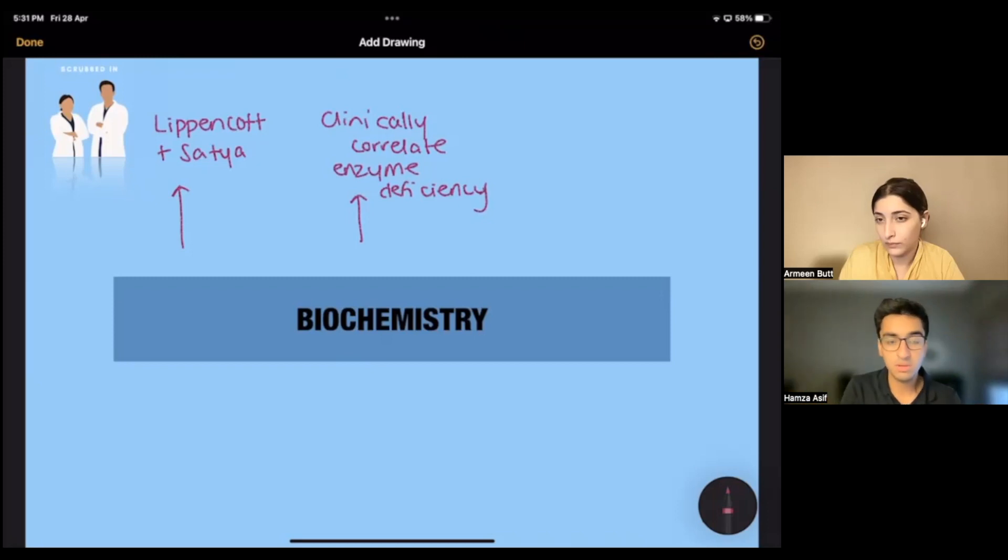So that's how you are supposed to clinically correlate it. They don't want you to memorize the pathway. They want you to know what happens if an enzyme of that pathway is deficient. So know that and clinically try to correlate that.